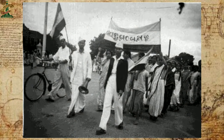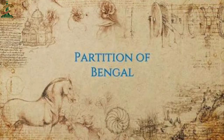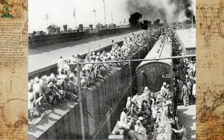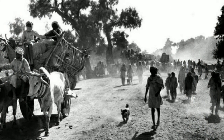Hindus did every possible effort to stop the division of Bengal. So the government again joined Bengal into one province in 1911. Hindu کے پرتشدد احتجاج، لڑائی جھگڑوں اور امن کی خرابی کی وجہ سے British government نے Bengal کو دوبارہ join کر دیا، یعنی اس کی division کو cancel کر دیا۔